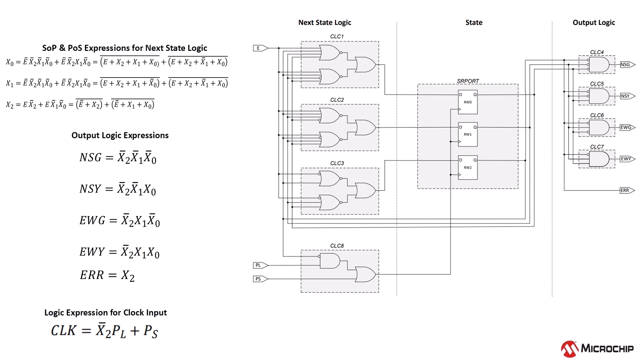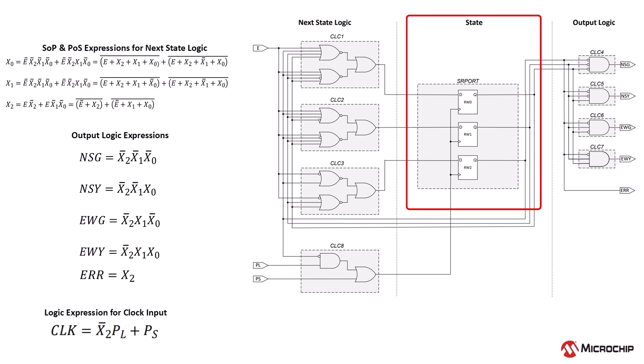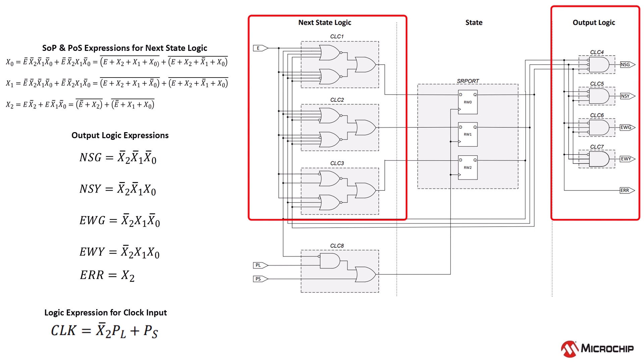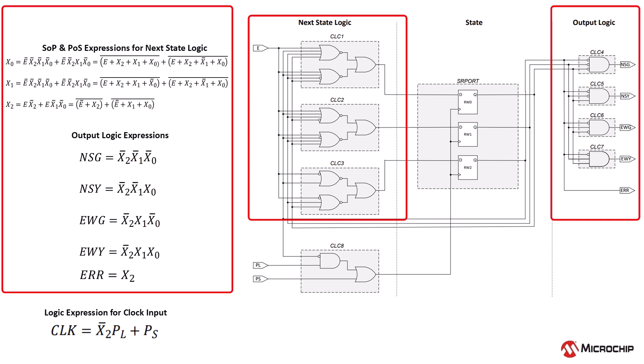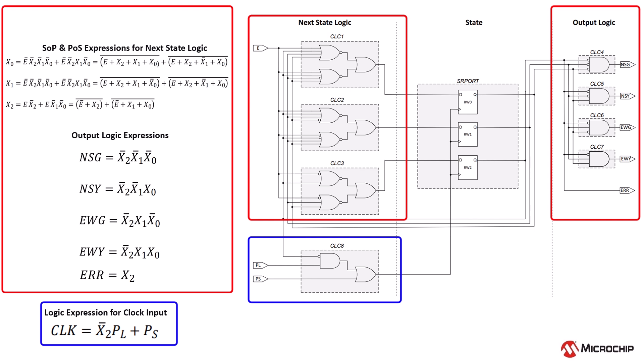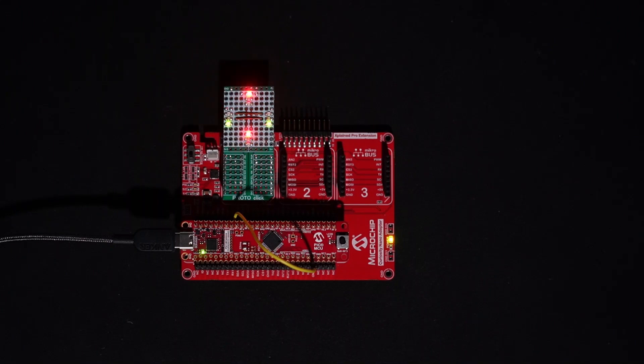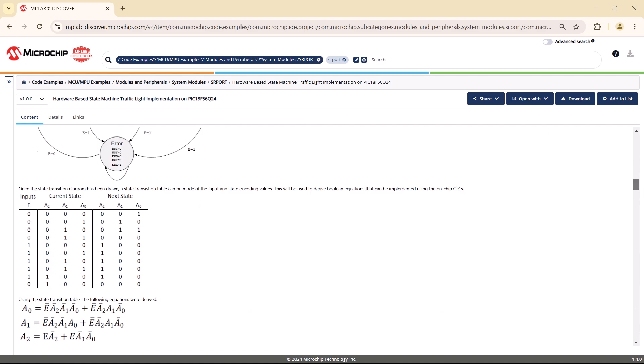The diagram on screen shows how the signal writing port and configurable logic cell work together to create a hardware-based state machine, with the configurable logic cell handling the logic needed for state transitions without software intervention. The signal writing port acts as state memory, storing the current state and transitioning to the next on each clock cycle. The configurable logic manages both next state logic and output generation, ensuring transitions follow the predefined Boolean logic equations. By configuring the configurable logic cells in AND-OR mode, Boolean expressions are efficiently implemented in hardware. On screen, you can see the state machine traffic light demo running on the PIC18Q24, demonstrating a fully hardware-driven implementation of a state machine.